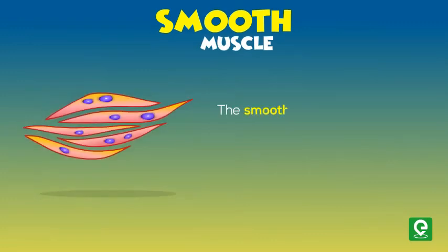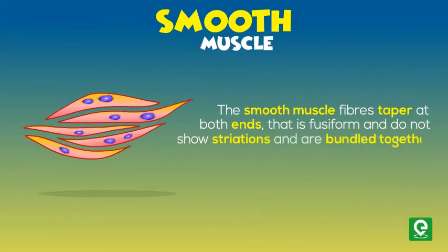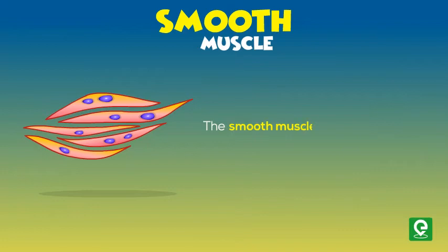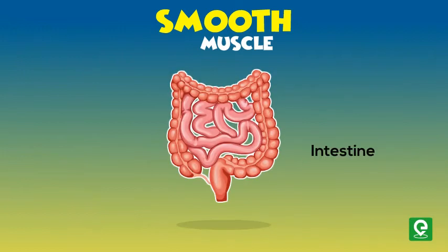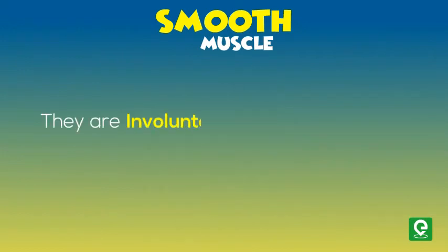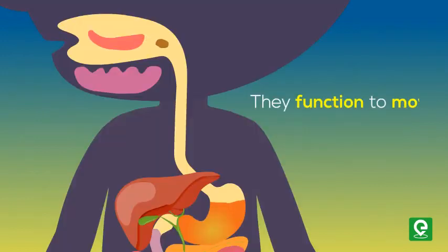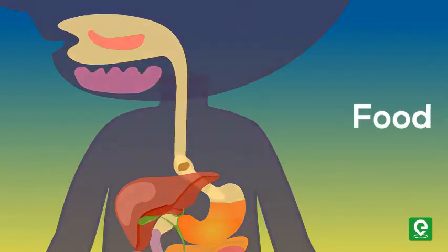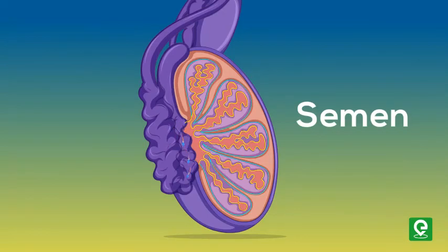Smooth muscle fibers taper at both ends — that is, fusiform in form — and do not show striations. They are bundled together in a connective tissue sheath. Smooth muscles are present in the walls of internal organs such as blood vessels, stomach, and intestine. They are involuntary, as their functioning cannot be directly controlled. Their function is to move substances such as food, urine, and semen, and also to constrict blood vessels.